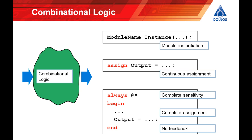Finally combinational logic can be described using always blocks provided that you obey the three golden rules that we use to teach proper RTL coding style. In case you're new to this the three golden rules are complete sensitivity, complete assignment and no feedback.